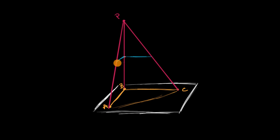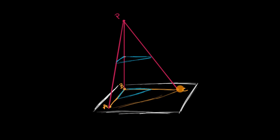Now you might be noticing something really interesting. If you were to translate that blue triangle straight down onto the surface of the table, it would look like this. And when you see it that way, it looks like it is a dilation of our original triangle centered at point B. And in fact, it is a dilation centered at point B with a scale factor of 0.5.